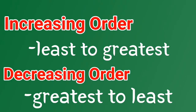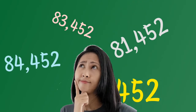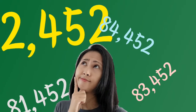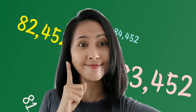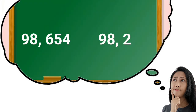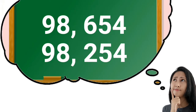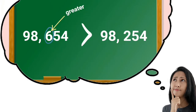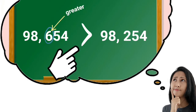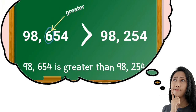How about larger numbers? How can we arrange them in order? We need to remember how to compare larger numbers. Start comparing from their highest place value. They have different digits in their hundreds place. Now you can say 98,654 is greater than 98,254.